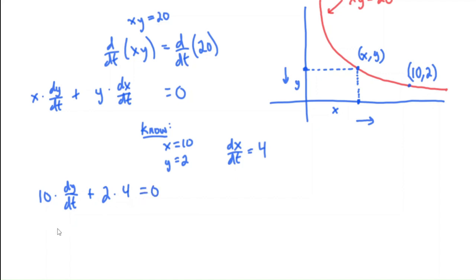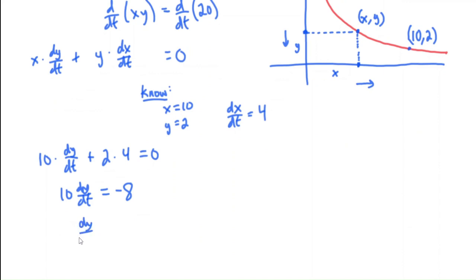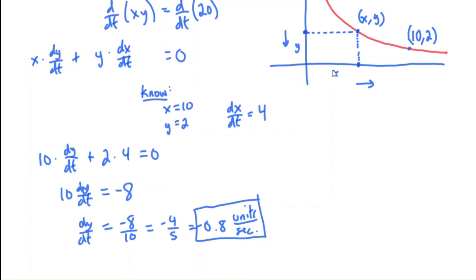Plugging in: 10(dy/dt) + 2(4) = 0, so 10(dy/dt) + 8 = 0. Solving: dy/dt = −8/10 = −4/5 = −0.8 units per second. As expected, the y-coordinate is decreasing — but at only 0.8 units per second, slower than the x-coordinate's 4 units per second, since we're far out along the curve at (10, 2).